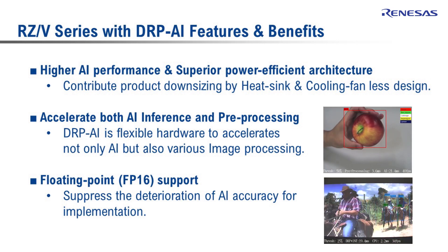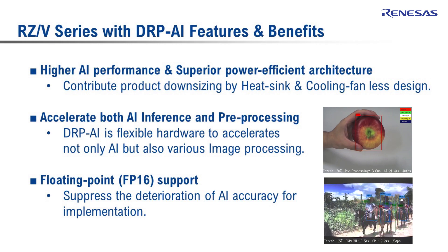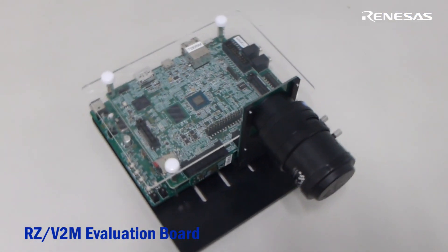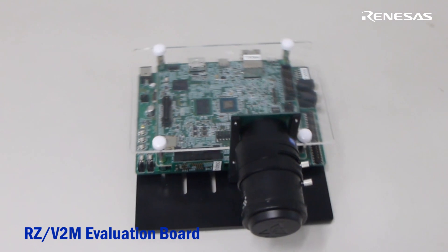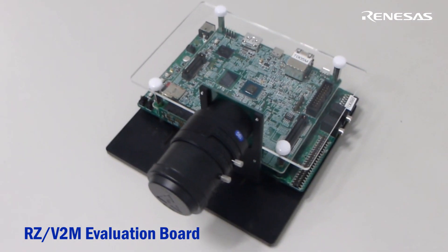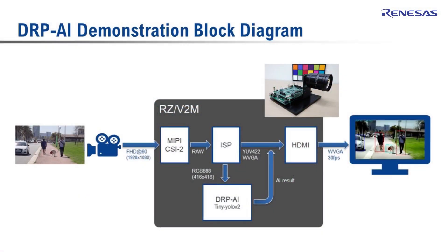Let's take a look at the first demonstration of AI-based object detection. This is the RZV2M evaluation board — it is six inches by four inches in dimensions and has two MIPI camera interfaces. The block diagram for this demonstration shows a MIPI camera input of 1080p at 60 frames per second.